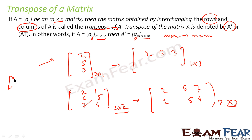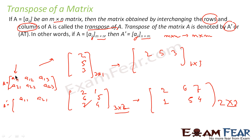Let me show this with a general matrix. If A = [[a11, a12, a13],[a21, a22, a23]], then A' (transpose of A) becomes [[a11, a21],[a12, a22],[a13, a23]]. The columns of A become the rows of A'. All elements aij become aji.